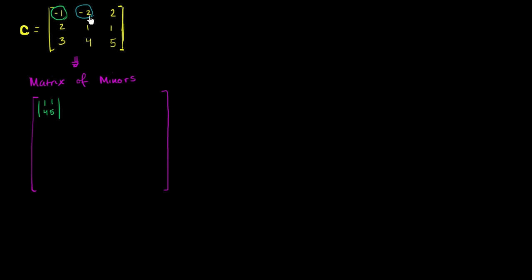Let's keep doing that. What is the next element going to be replaced with? Well, it's going to be replaced — cross out this row, this column — with the determinant of 2, 1, 3, 5.